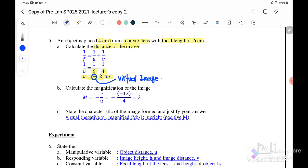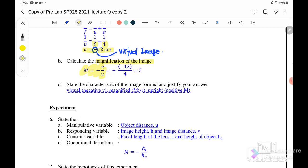Part b: calculate the magnification of the image. The magnification equation is M equals negative v over u. When we substitute v equals negative 12, we will get the answer is 3. When M is greater than one, meaning that it's actually magnified. And the value that we get is positive, so positive here indicates that it's actually upright.